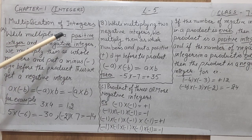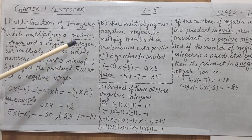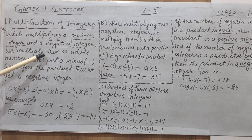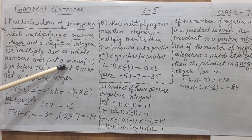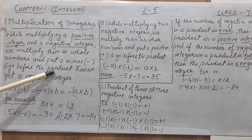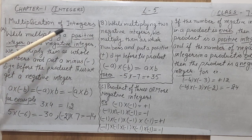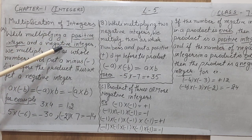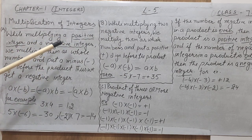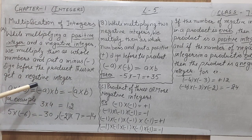While multiplying a positive integer and a negative integer, we multiply them as whole numbers and put a minus sign before the product. Thus, we get a negative integer. So, when we multiply one positive and one negative integer in any order, we get a negative integer.